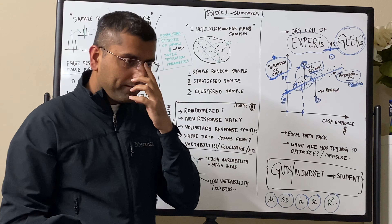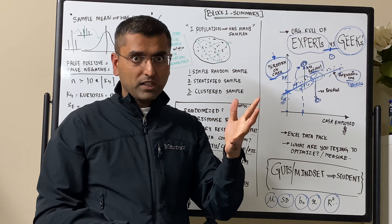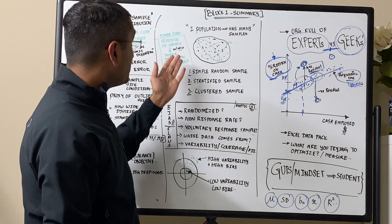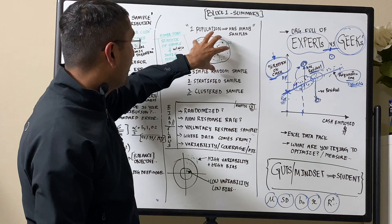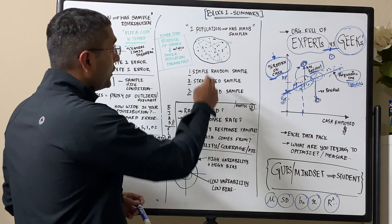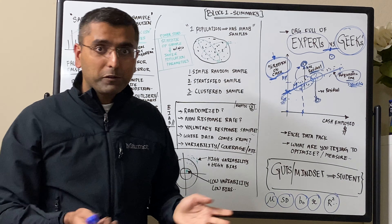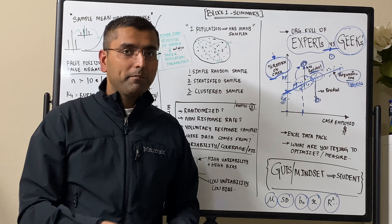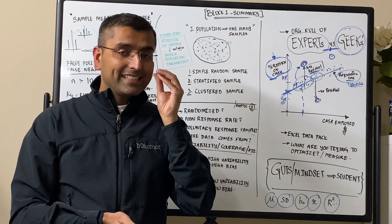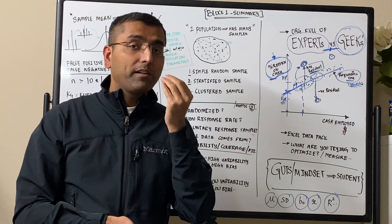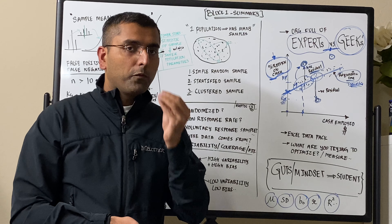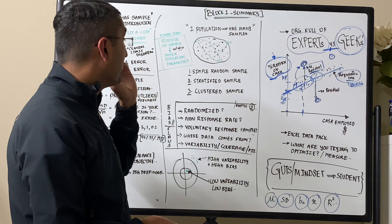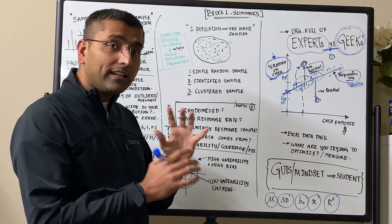Simple example: a developer productivity survey — you're trying to find out if the developers are productive. Let's say these are your population of developers. You could survey every one of them, but that would be very expensive. You would want to get a sample of those people that is representative. To understand what a representative sample set is, it's very important to understand how data and analysis is done.